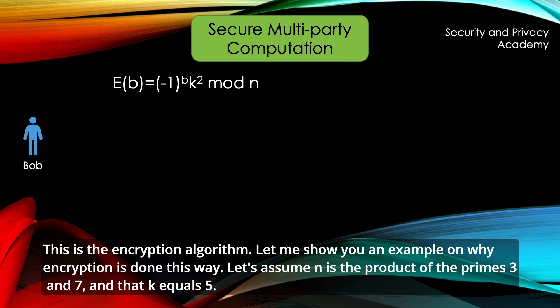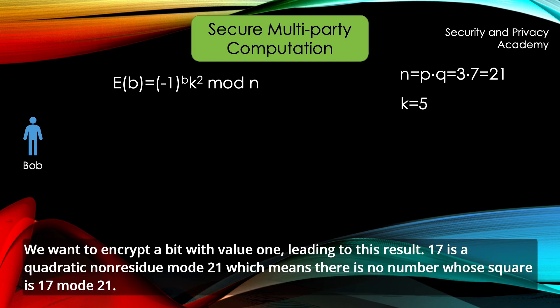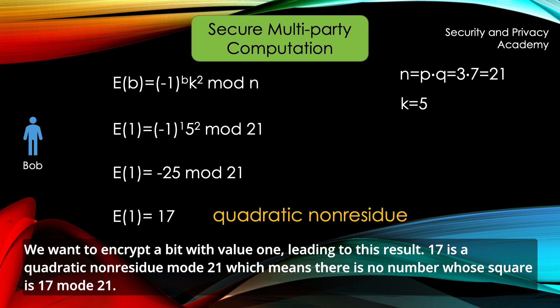This is the encryption algorithm. Let me show you an example on why encryption is done this way. Let's assume n is the product of the primes 3 and 7 and k equals 5. We want to encrypt a bit with value 1, leading to this result.